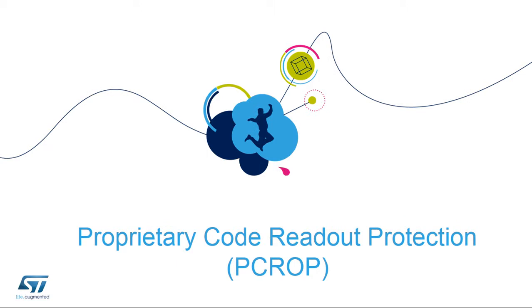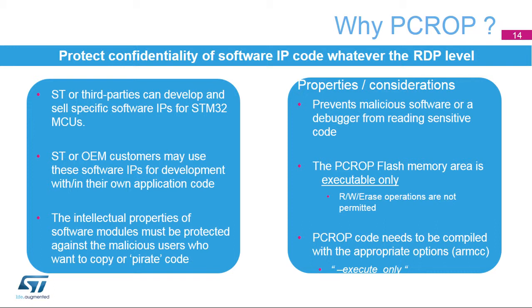Let's take a closer look at the details of Proprietary Code Readout Protection, or PC-ROP, and how it's different from RDP. PC-ROP means Proprietary Code Readout Protection — basically a way to protect the confidentiality of third-party software intellectual property code independently of the RDP level setting. Third parties may develop and sell specific software IPs for STM32 microcontrollers, and original equipment manufacturers may use them when developing their own application code. PC-ROP helps protect the confidentiality of third-party IPs against malicious users.